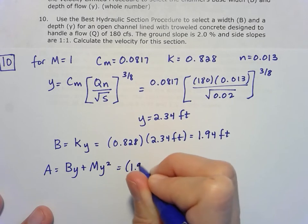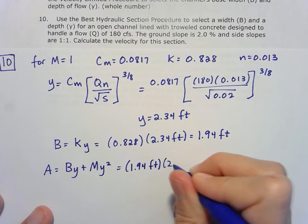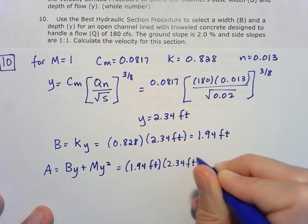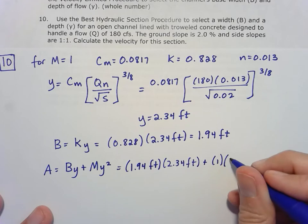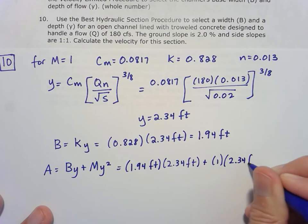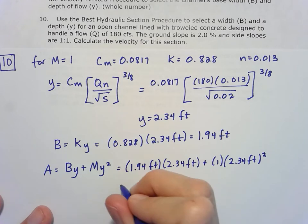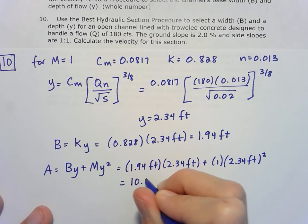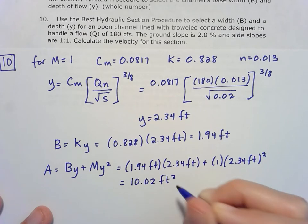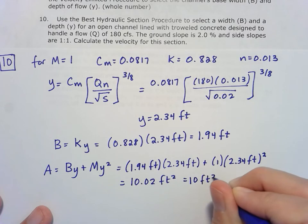we have 1.94 feet times the 2.34 feet plus, and then M, we remember, is 1 in this case, and then 2.34 feet squared. And when we do all that math, we find out that that area is just a little bit over 10, 10.02 feet squared, but I'm just going to go ahead and use 10 for the purposes of this problem.